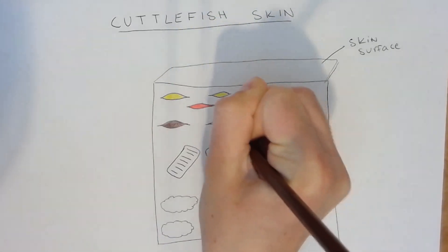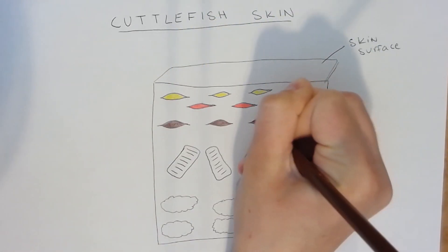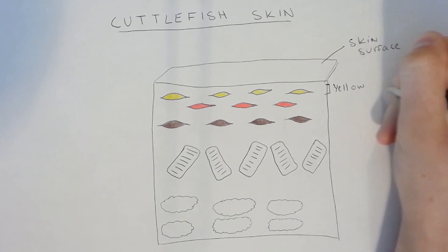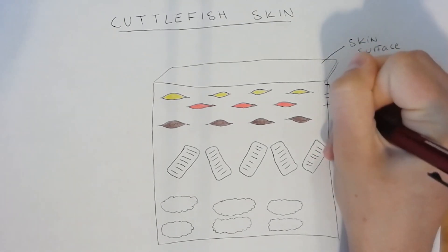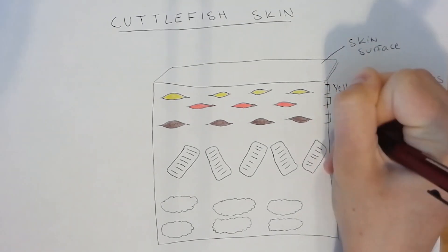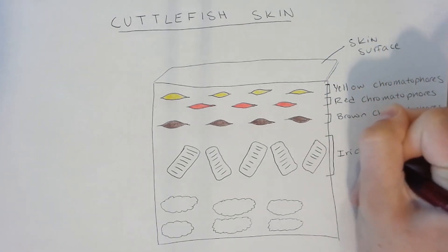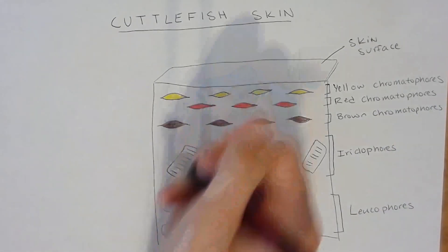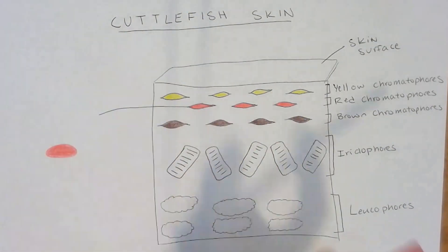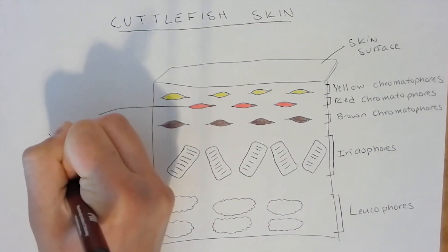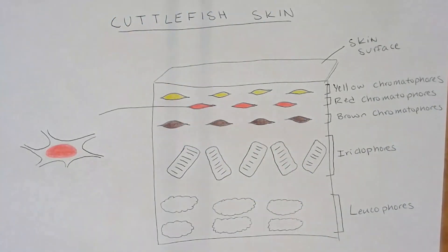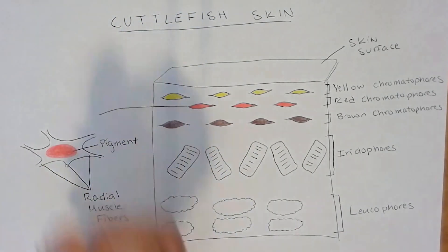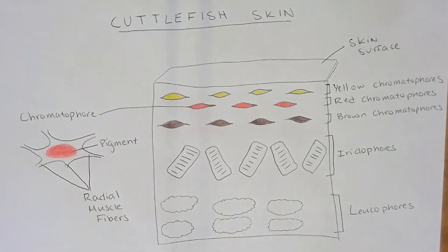Now that we've drawn all three skin layers, let's add some colors to the chromatophores and make sure everything is labeled properly. The last element you may want to add to your skin diagram is a top view of an individual chromatophore, to demonstrate the muscle fibers surrounding the pigment-filled sac.